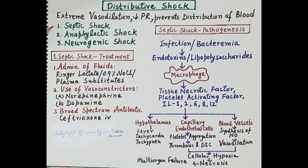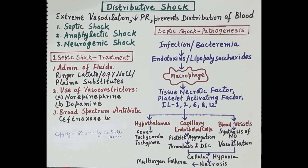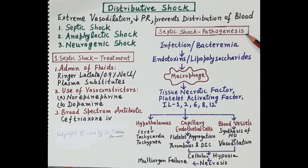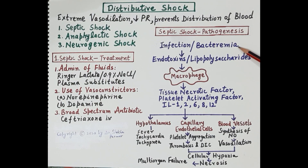The three types are septic shock, anaphylactic shock, and neurogenic shock. We will discuss all three in detail. First, let's talk about the pathogenesis of septic shock. Microorganisms like bacteria release toxins into the blood, and these toxins cause poisoning of the blood, termed as sepsis.